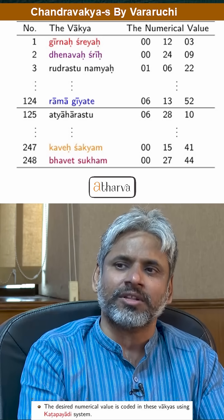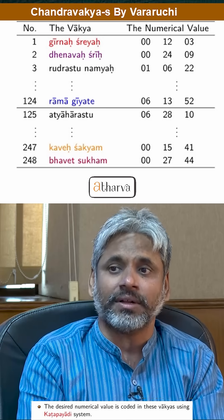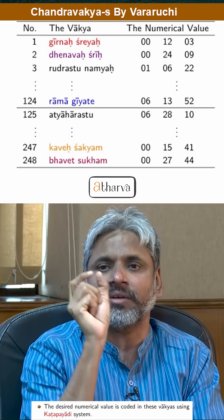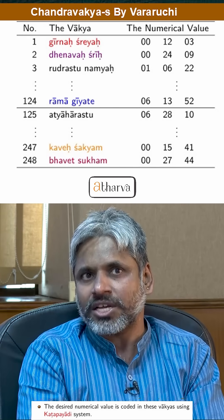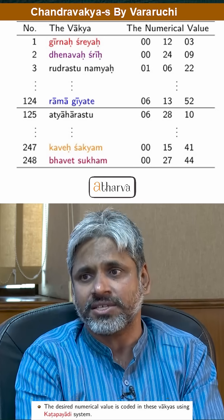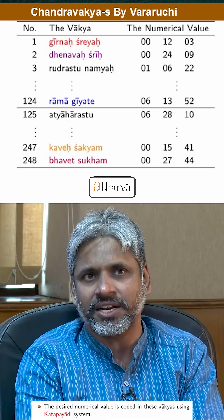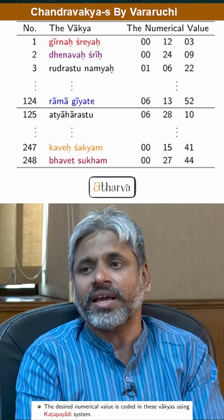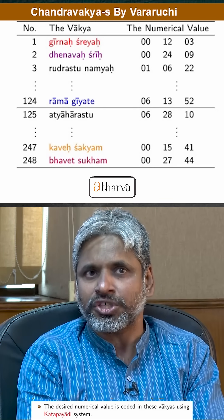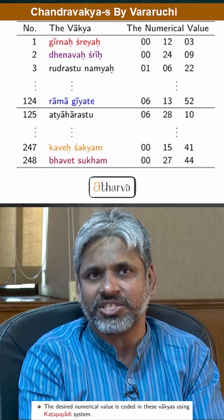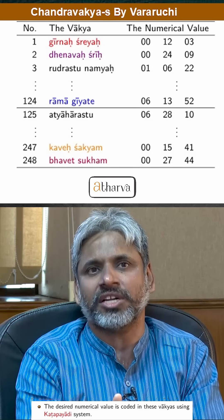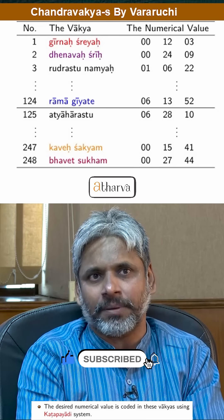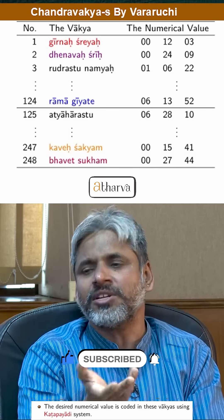Unlike in the case of Indraprastha or Delhi, here we have 3 subunits. The number has to be divided into groups of 2 syllables, and each 2 syllables represent 1 unit. The first 2 syllables — '00' in 'Girna Shreyaha' — represent Rashis, where one Rashi is one zodiac sign representing 30 degrees. The second unit is in degrees, that is 12 degrees, and the third is 03 minutes. So the true longitude of the moon on the first day using the Vakya 'Girna Shreyaha' is 0 Rashis, 12 degrees, and 3 minutes, meaning the moon is in the first Rashi, 12th degree, and 3 minutes. Since there is an absence of 2 syllables, we consider it as 00.